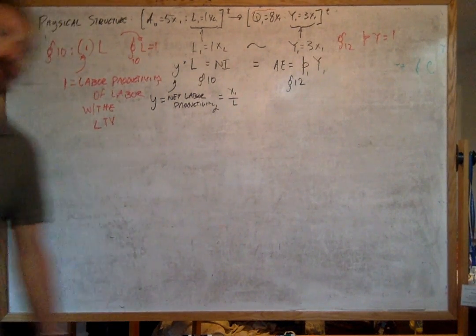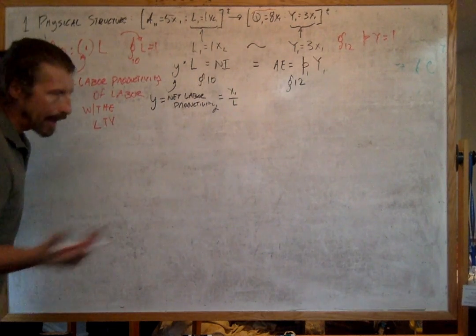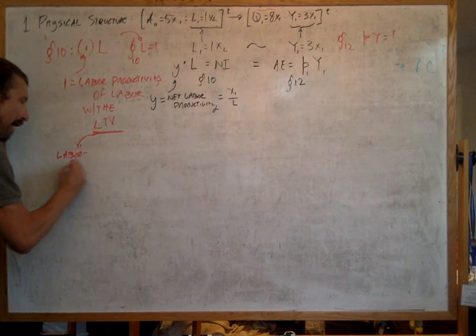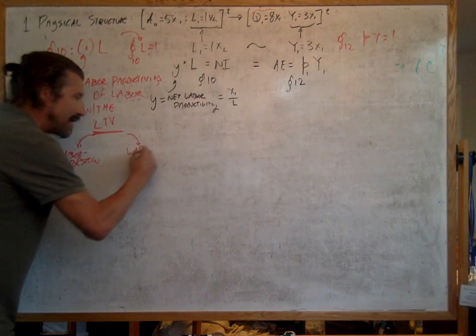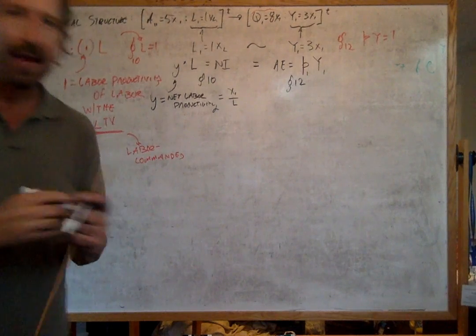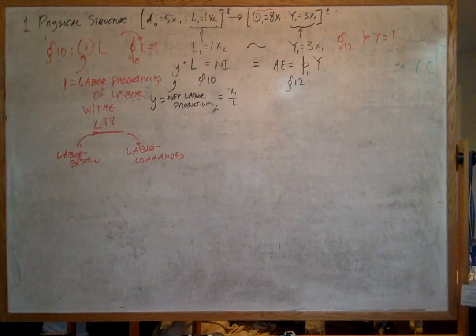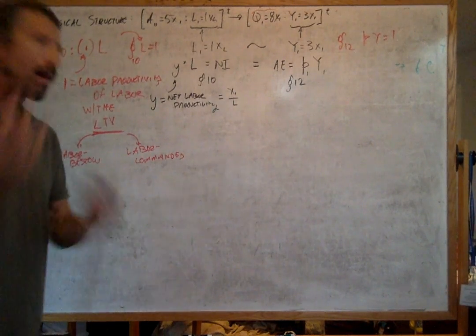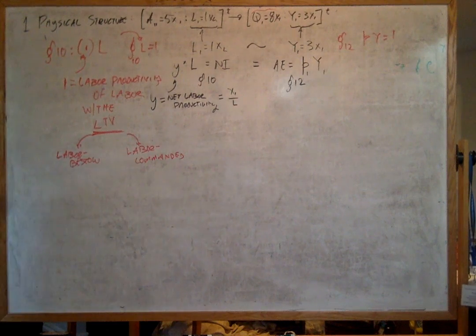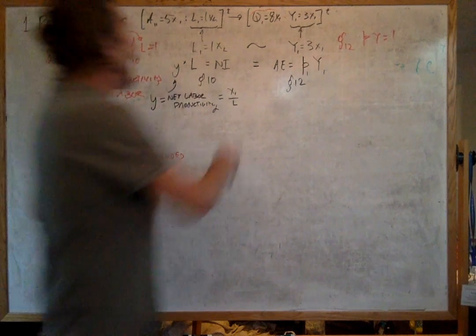My understanding — and I'm not necessarily attributing this to Sraffa, but it's certainly what I can get out of Sraffa — is that the labor theory of value is going to be an expansive theory. It's going to have a labor-bestowed component and a labor-commanded component. Bestowed and commanded are not two competing measures of value. I think that's one of the biggest errors in heterodox, Marxian, and Sraffian political economy — where people critique each other because labor commanded is not labor bestowed. Sraffa is addressing this.